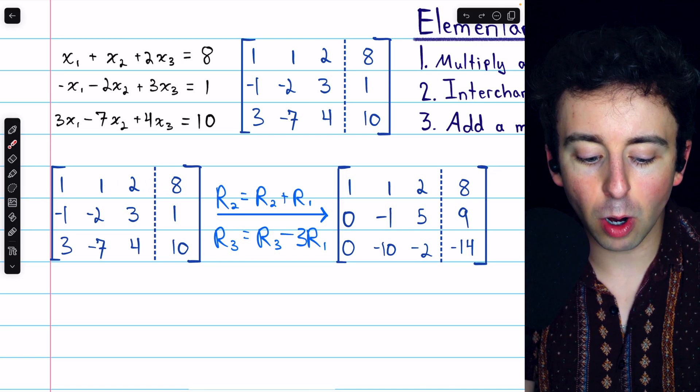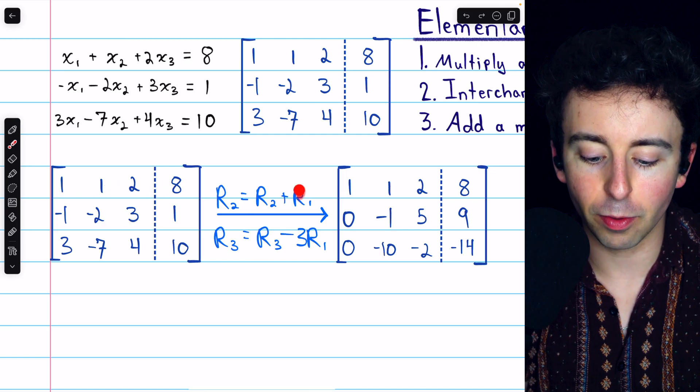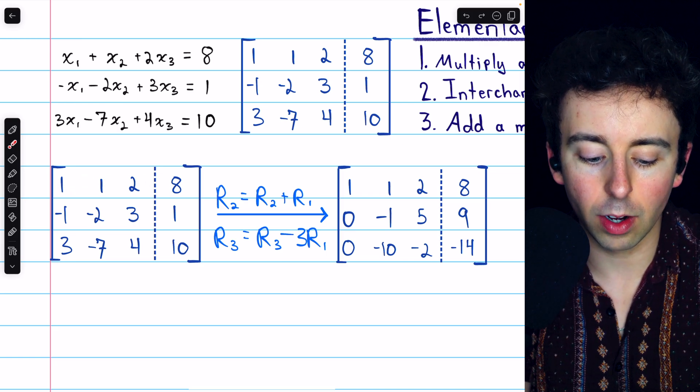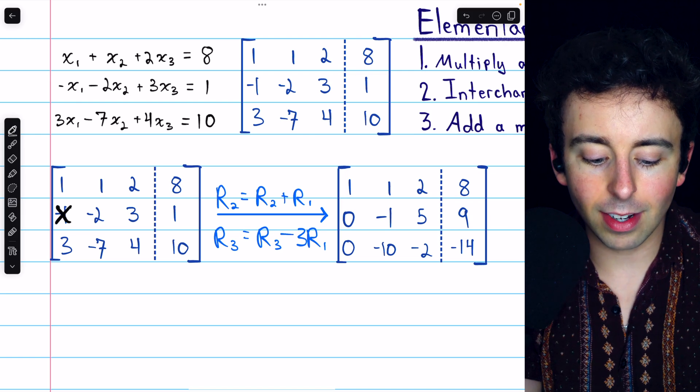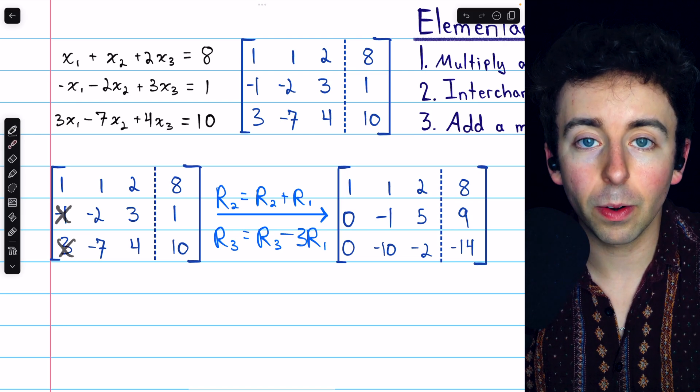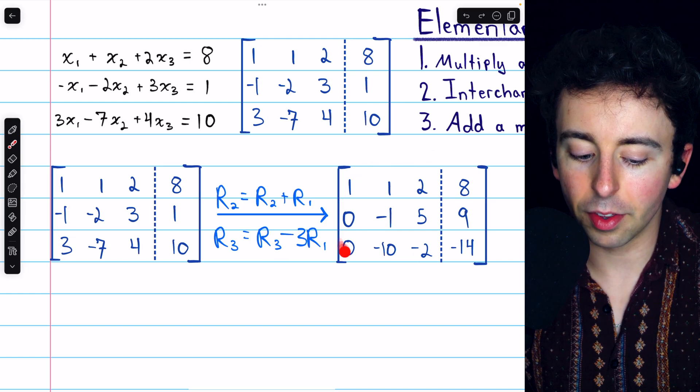Those two things will turn this negative 1 and this 3 both into a zero. And we see that in this resulting matrix.